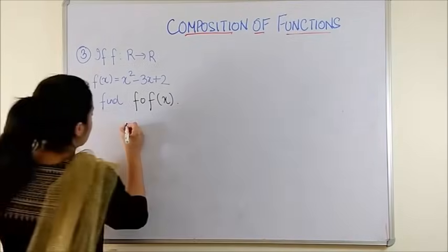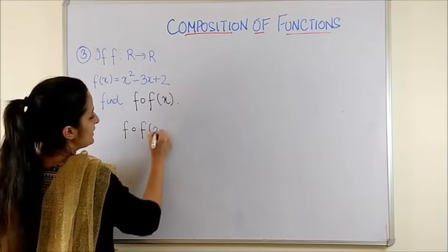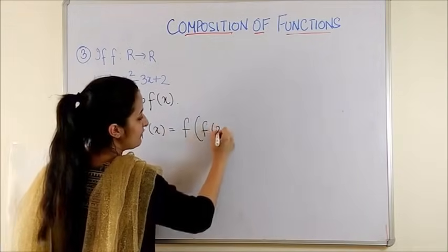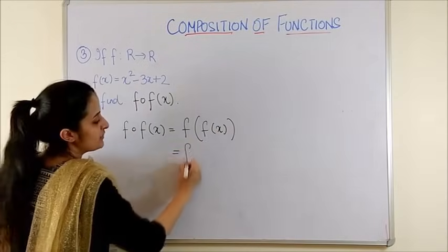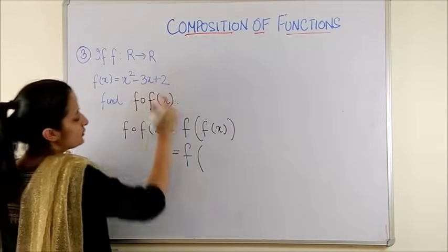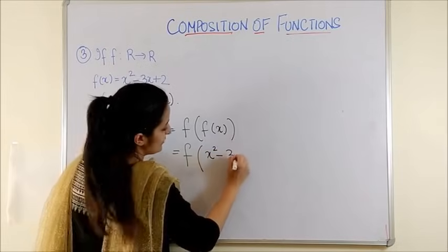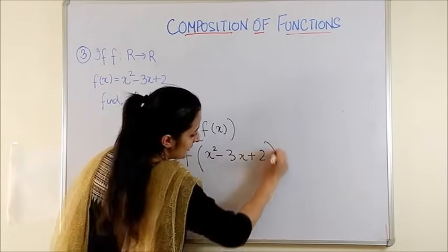So that means for F of fx, we need to find F applied to fx again. Which means F applied to x square minus 3x plus 2.